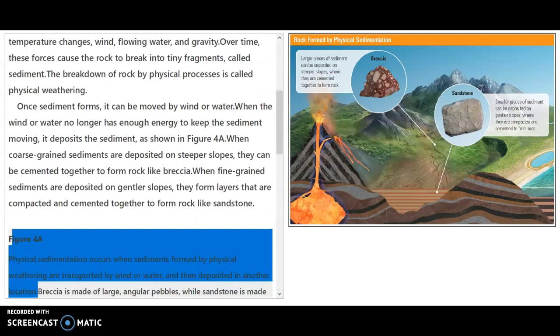Here we have Figure 4a. You can see that on the right side, there's a picture of breccia and a picture of sandstone to show you what those differences look like. Notice the grain sizes. The breccia has big chunks in it, so that's a coarser grain, and then the sandstone is much finer.